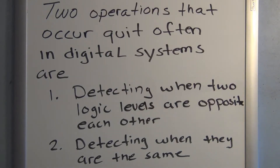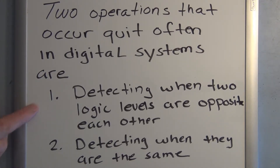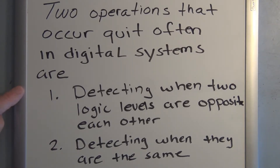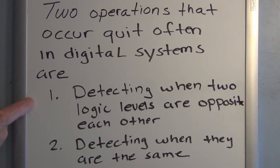Hi everyone, welcome to my channel. Two operations that occur quite often in digital systems are: one, detecting when two logic levels are opposite each other, and two, detecting when they are the same. We're going to use what we learned from the last video to develop the truth tables for these two operations and from the truth tables develop the output logic expression.